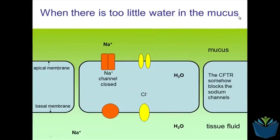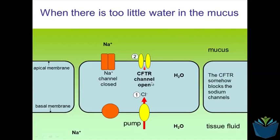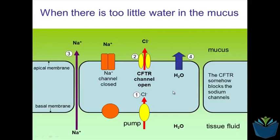In the opposite instance, if the mucus has too little water in it, chloride ions are pumped into the cell, and then the CFTR protein or channel opens, enabling chloride ions to be pumped from within the cell to outside. The sodium ion channel is closed, and therefore water moves from the inside of the cell outward, making the mucus less thick and sticky.